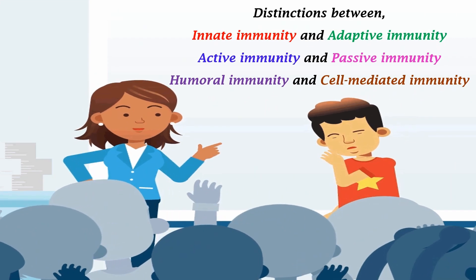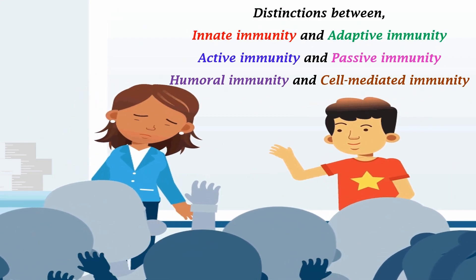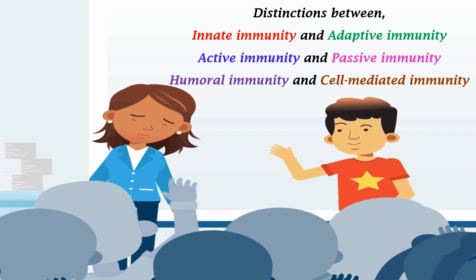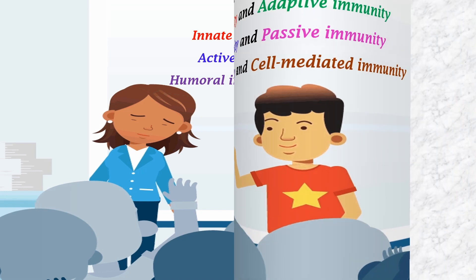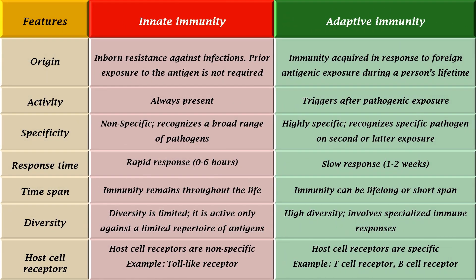This presentation features the distinctions between innate immunity and adaptive immunity, active immunity and passive immunity, and humoral immunity and cell-mediated immunity. Innate immunity is the inborn resistance against infections, and prior exposure to the antigen is not required. Adaptive immunity is the immunity acquired in response to foreign antigenic exposure during a person's lifetime.